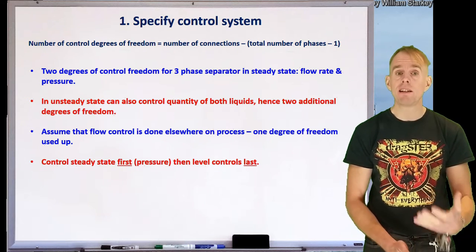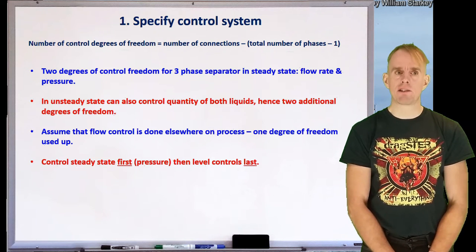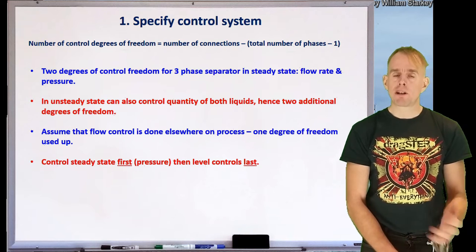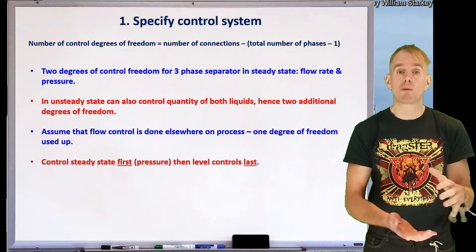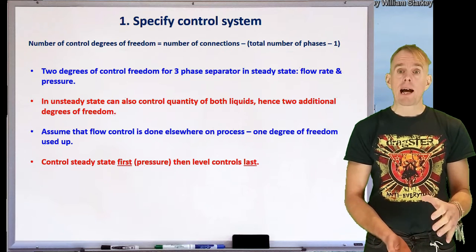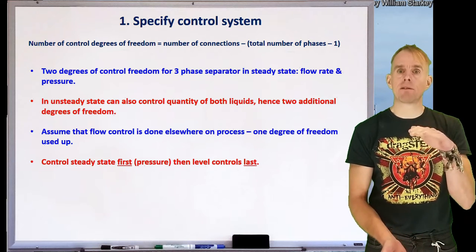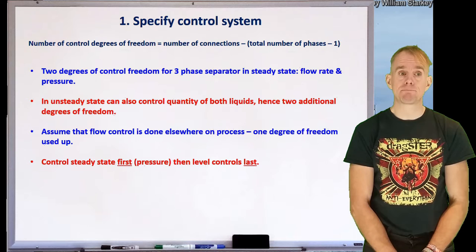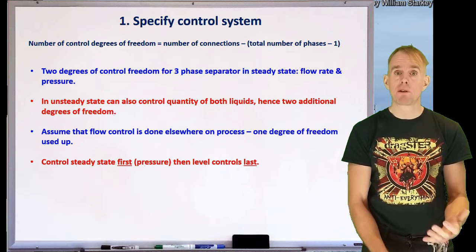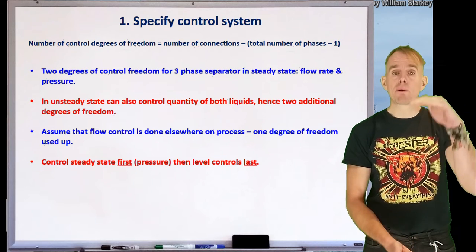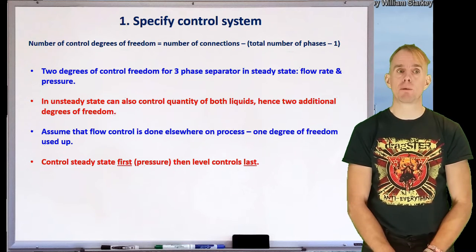So our steady state control might just be pressure. Now let's think about the unsteady state. When starting the process up or shutting it down, the liquid levels in the tank can change — increase or decrease — and the relative proportion of the two liquids can change as well. The depth of the organic layer and the aqueous layer can change with respect to one another, giving us two additional degrees of freedom: the total amount of liquid, and the ratio of organic to aqueous liquid — effectively the position of the phase boundary between them.